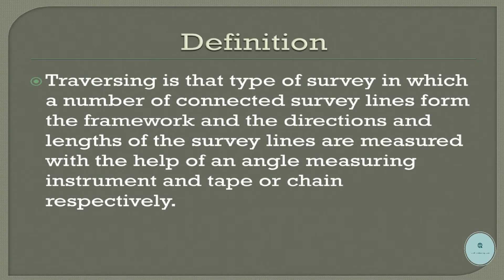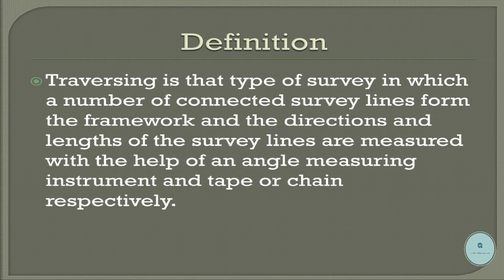Definition: Traversing is that type of survey in which a number of connected survey lines form the framework, and the directions and lengths of the survey lines are measured with the help of an angle measuring instrument and tape or chain respectively.